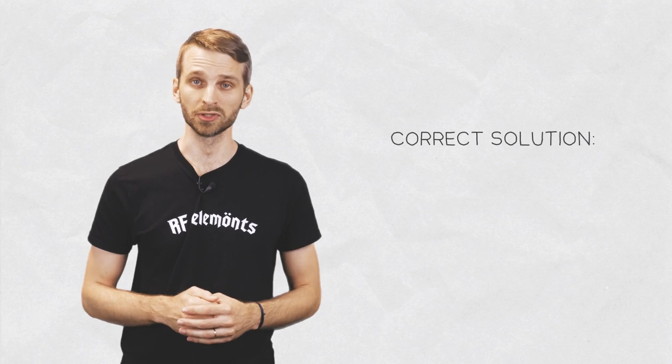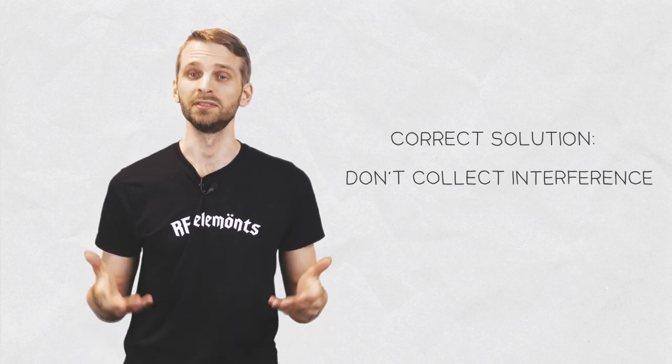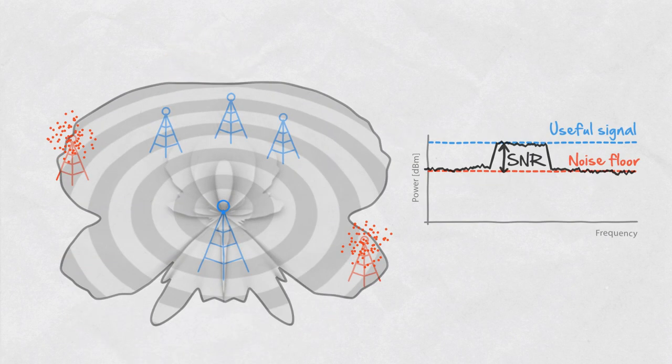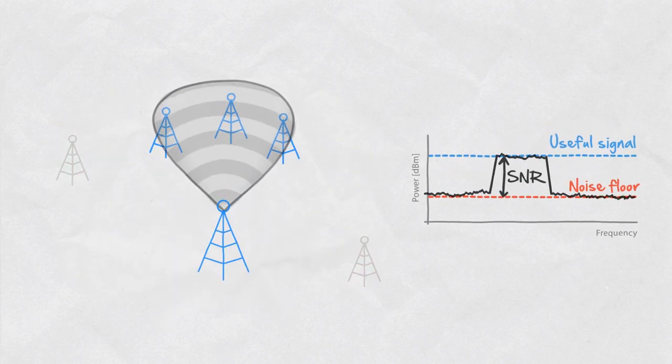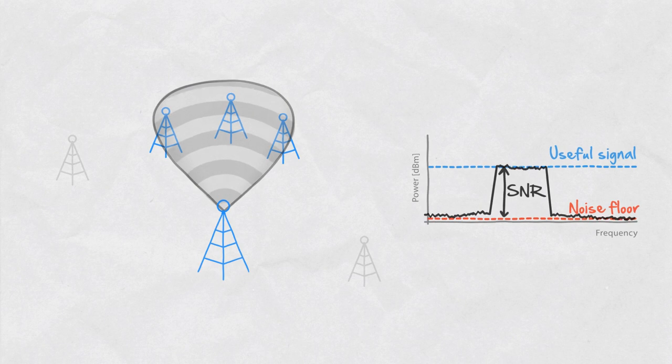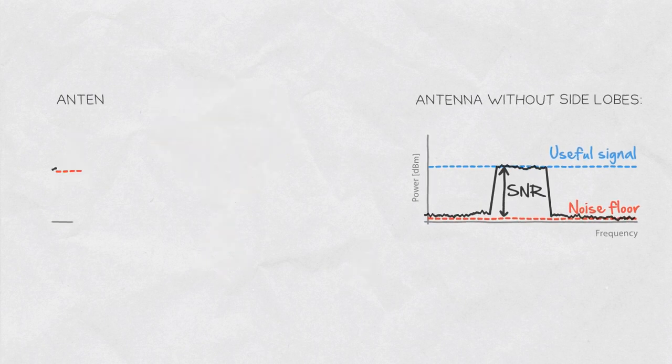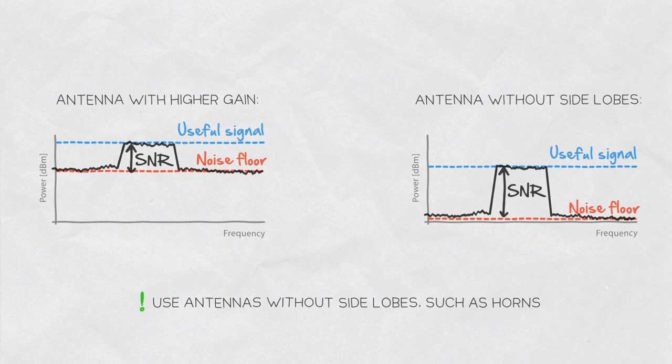The best way to avoid increasing the noise floor is to avoid collecting the interference in the first place. Using an antenna with small or no side lobes such as horn will push the noise floor down. Despite the horn might have smaller gain, the lack of side lobes improves the SNR, so eventually the link can perform better than with a higher gain antenna.